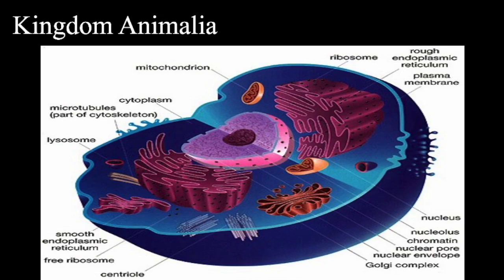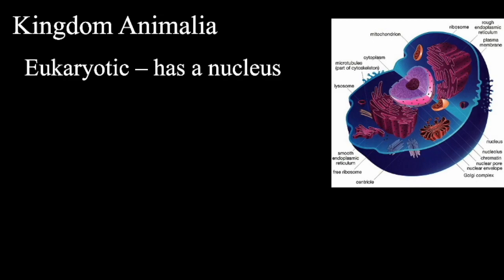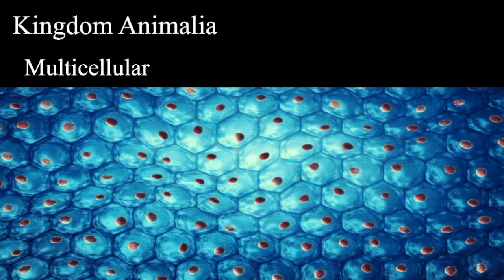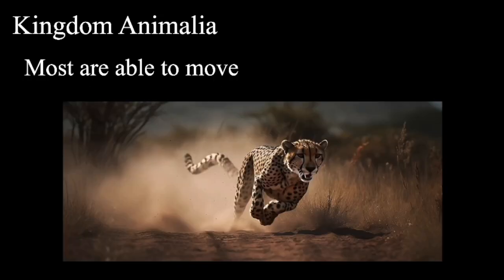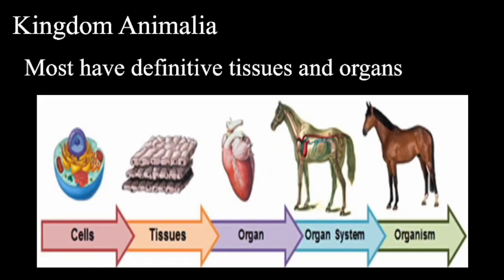In Kingdom Animalia, all organisms are heterotrophic — they must go find their own food and cannot make it. Eukaryotic means to have a nucleus — the control center of the cell where DNA is found. All organisms are multicellular. Most are able to move, though coral is placed in this kingdom and cannot move. Most have definitive tissues and organs. We start with the most basic unit — a cell. Cells together create tissues; tissues create organs; organs create organ systems; and organ systems form a complete organism.